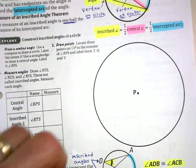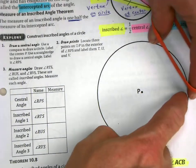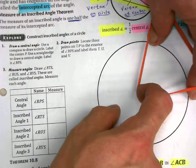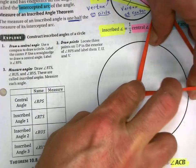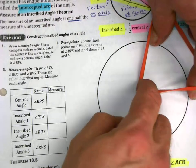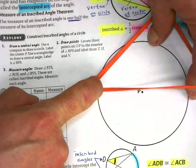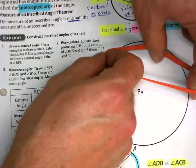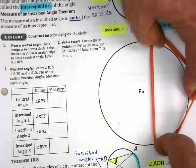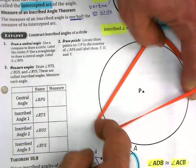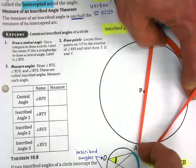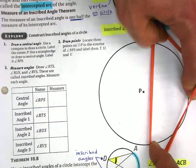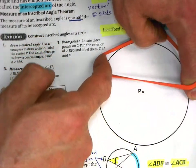Let me demonstrate this. The measure of the intercepted arc is the same as the measure of its central angle. But when I pull the vertex over to the side so it becomes an inscribed angle, the measure of that inscribed angle is going to be the same no matter where the vertex of that inscribed angle is placed on the circle.